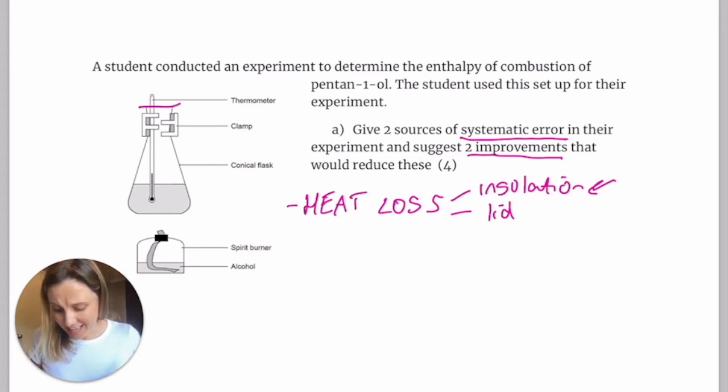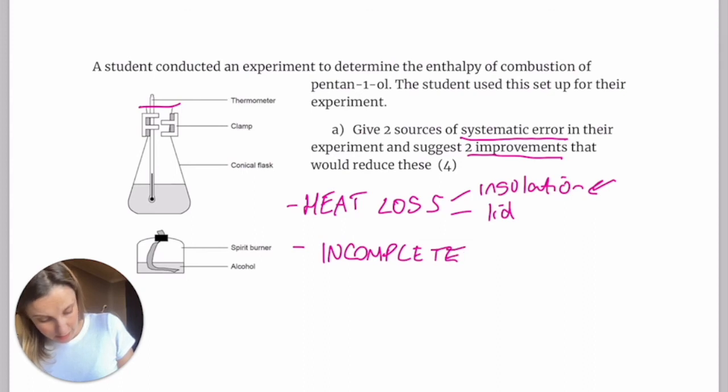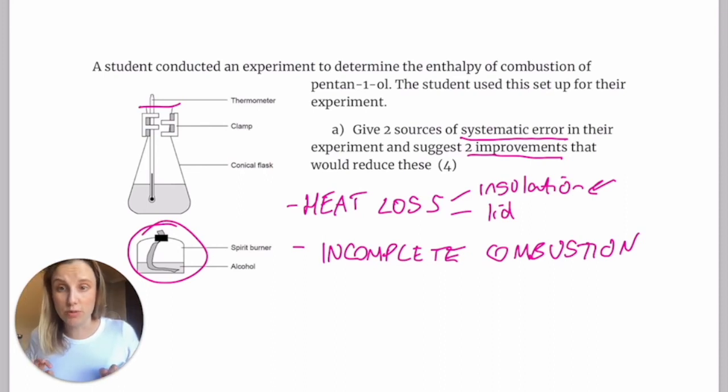Insulation, lids, things like that making a really big difference. You've also got things like incomplete combustion. So if you've got incomplete combustion from your spirit burner, then your alcohol is not burning in enough oxygen. So that's causing you to calculate your enthalpy of combustion incorrectly.